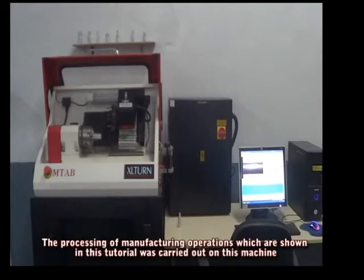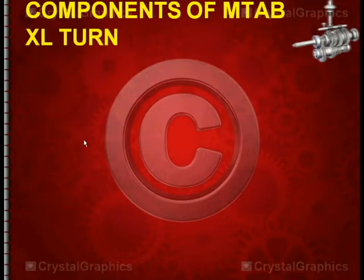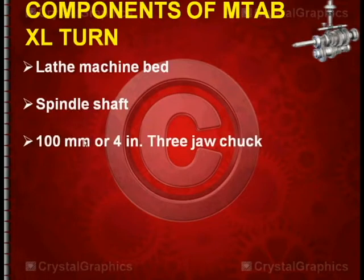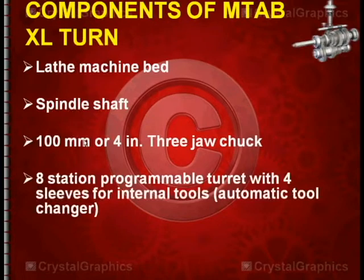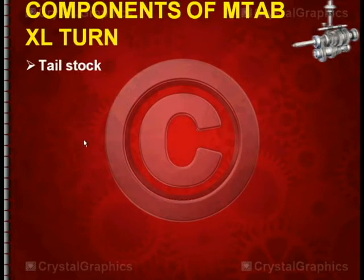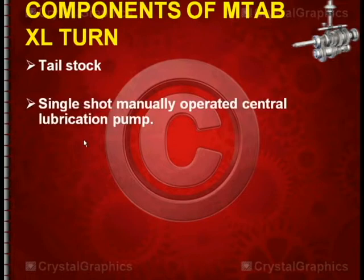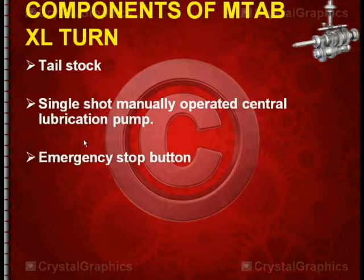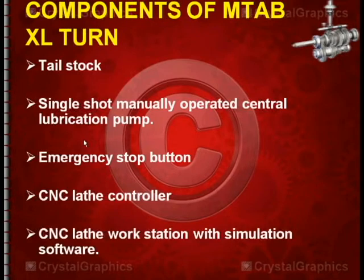The processing of manufacturing operations shown in this tutorial was carried out on this machine. The components of MTab XLtern CNC machine are: lathe machine bed, spindle shaft, 100mm or 4-inch 3-jaw chuck, 8-station programmable turret with 4 sleeves for internal tools, headstock and tailstock, single-shot manually operated central lubrication pump, emergency stop button, CNC lathe controller, and CNC workstation with simulation software.